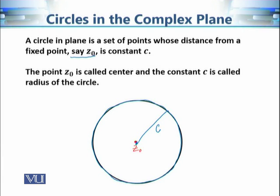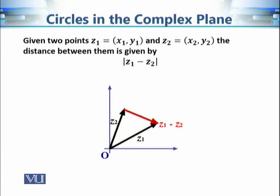To describe different geometrical properties of a region, we need the notion of distance. Given two complex numbers in the complex plane, the distance between them uses our previous knowledge: if we are given complex numbers z₁ and z₂, then the distance between them is the modulus of z₁ minus z₂.